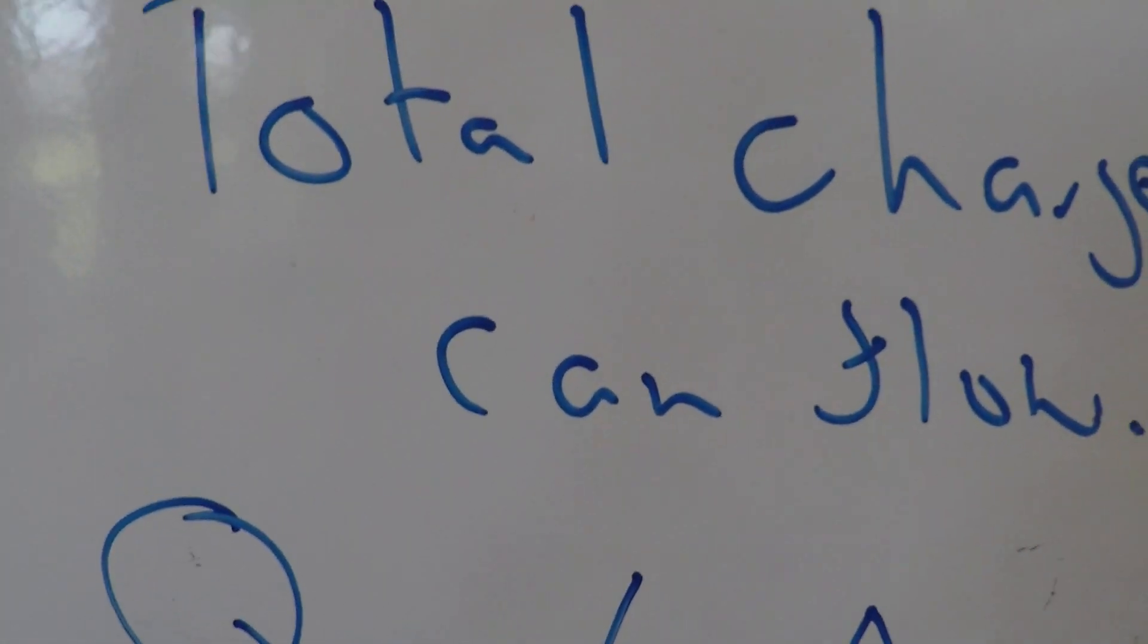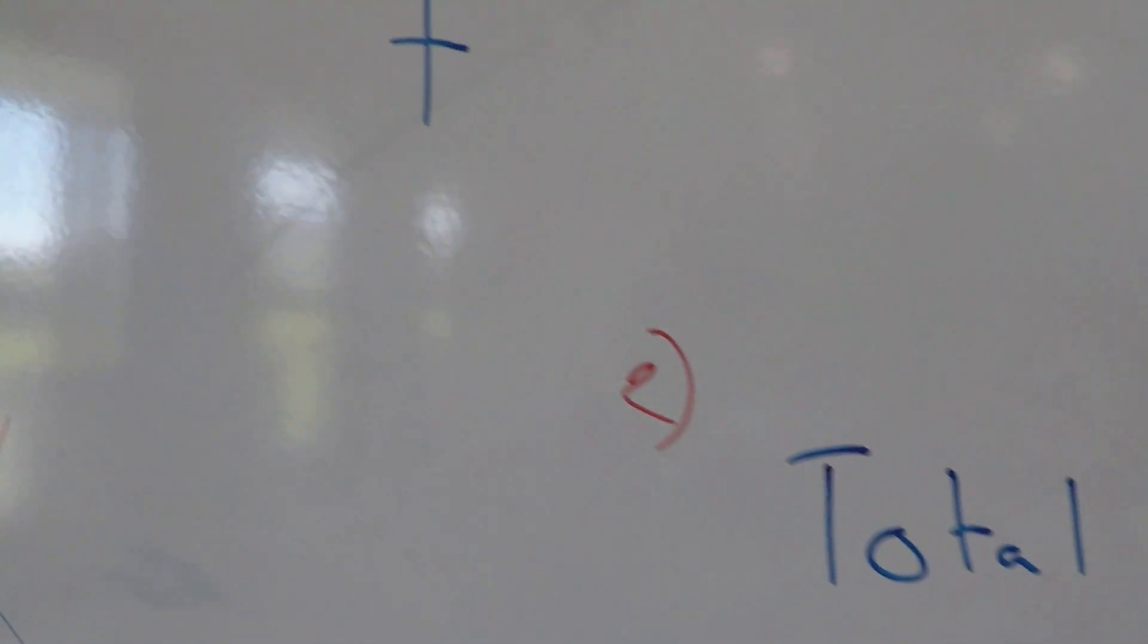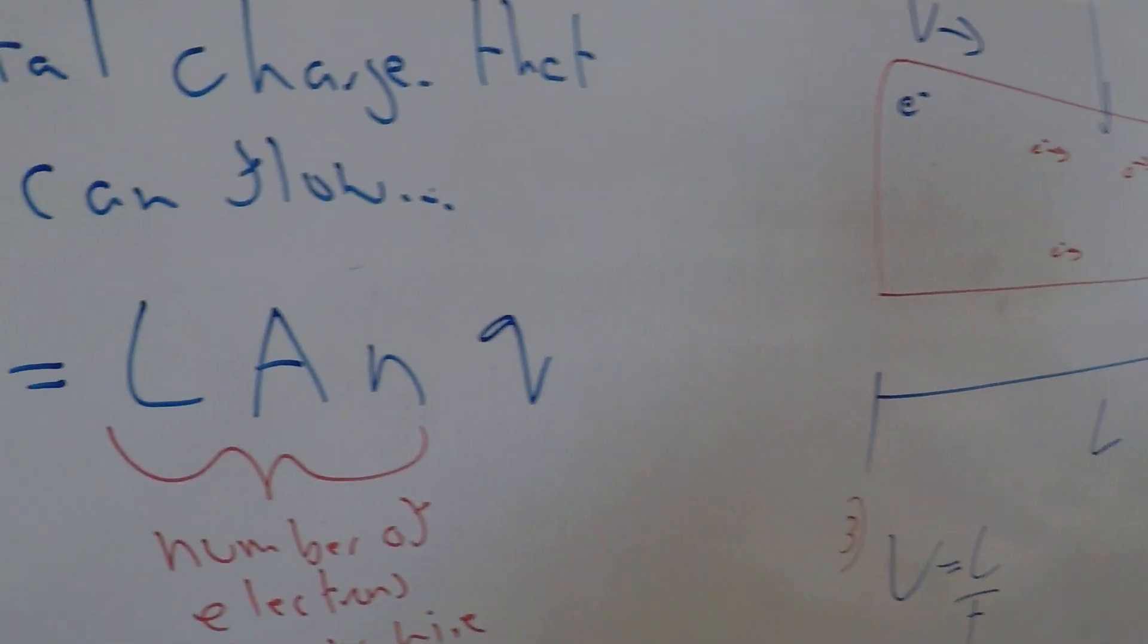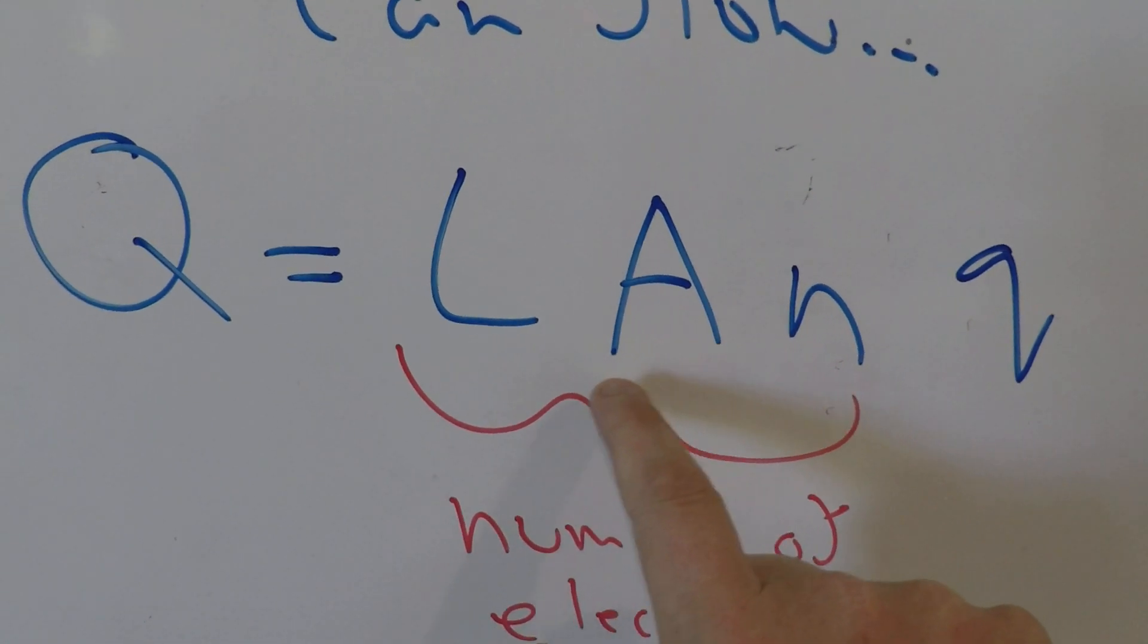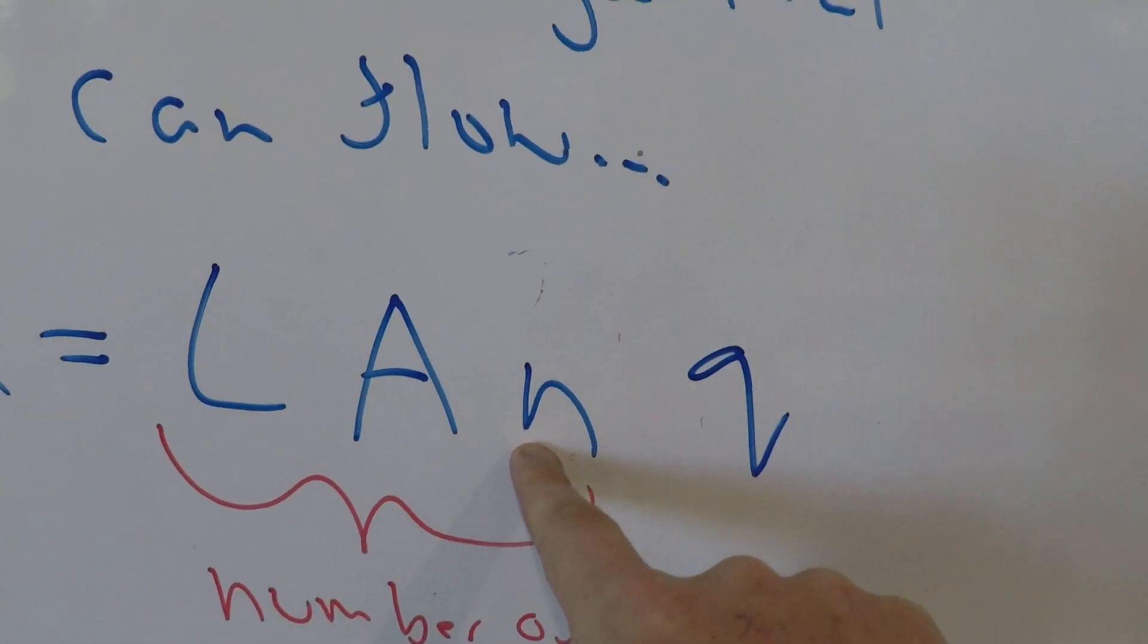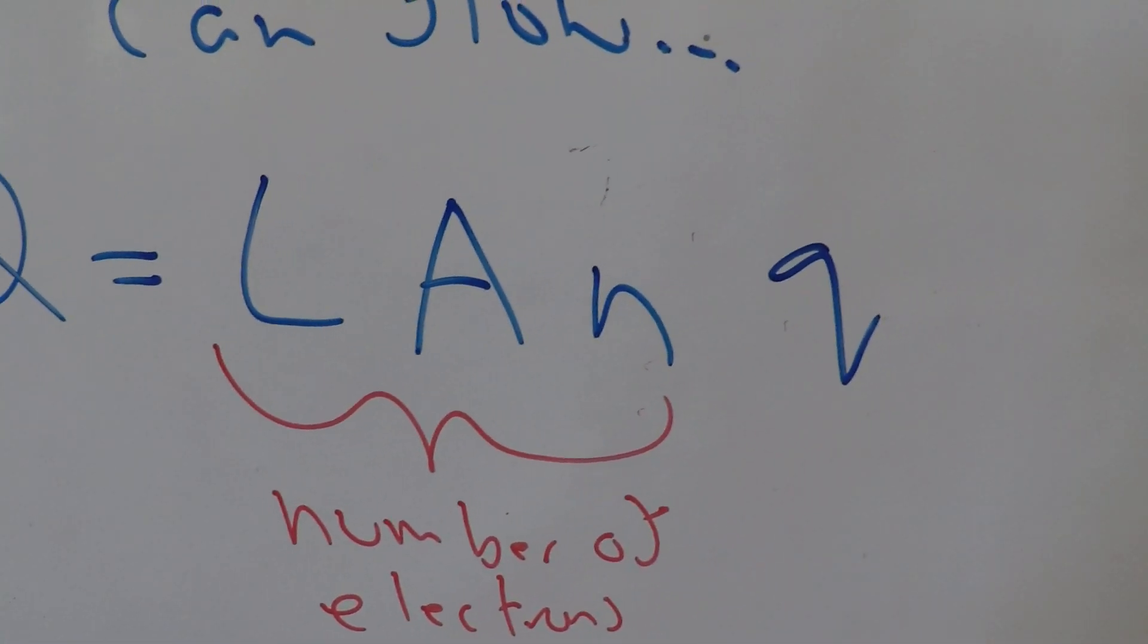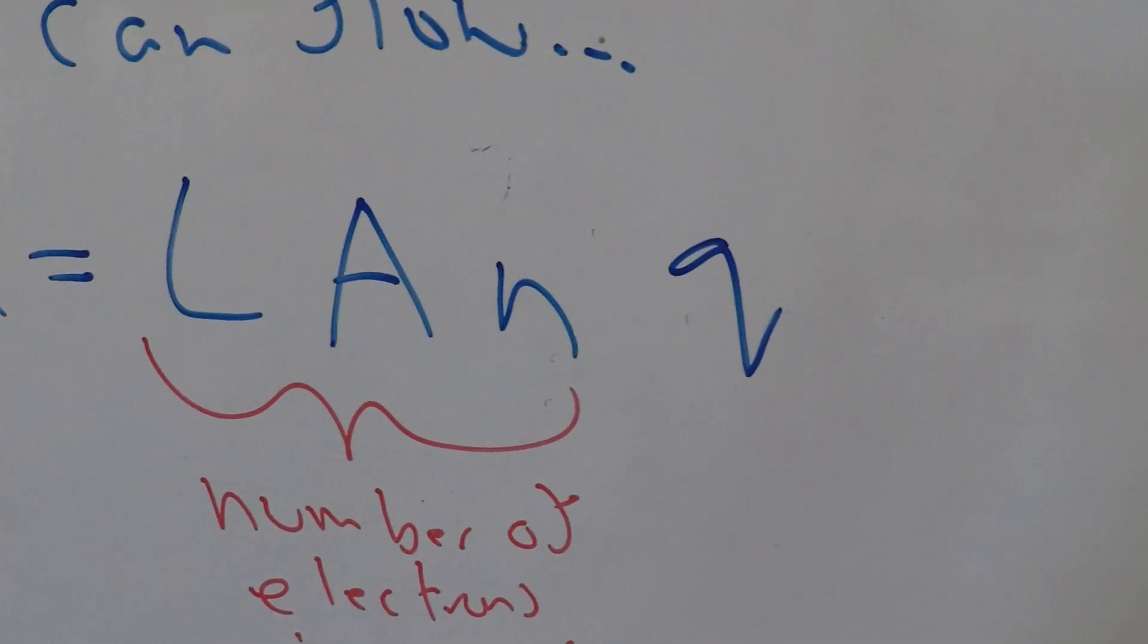So how can we work out what's the total charge that can flow? We've got Q here, and we want to know what's the total charge that can flow. Well, the volume of my wire would be the length times the cross-sectional area, and if I times my volume by the number of electrons that can flow in a meters cubed, this will tell me how many electrons can flow in my wire, and then finally, if I times it by Q, that's the total charge that can flow in the wire.